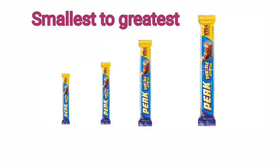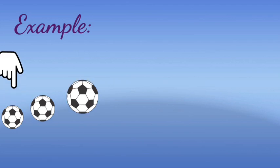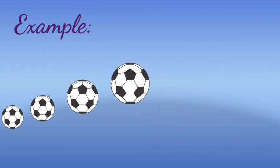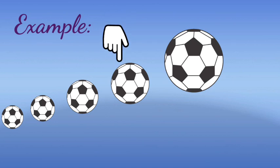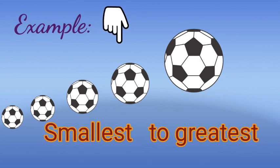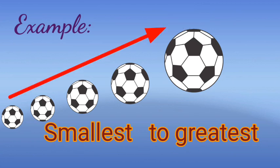Are you clear, children? Next, see this another example. Dear children, see this ball. First one — the smallest one. Next, a little bigger. Next, bigger. Next, a little bigger. The next one is the biggest. So, smallest to greatest is known as increasing order.